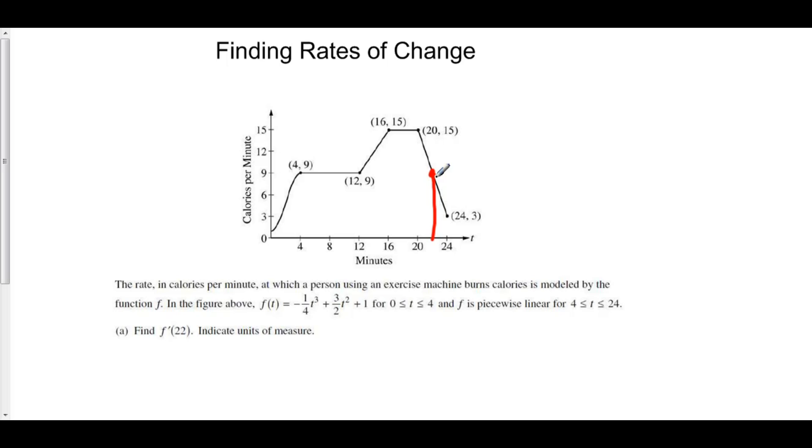Remember that the derivative is the slope of the tangent line. Well, the tangent line here is this line. It's the line from (20, 15) to (24, 3). The fact is that the rate of change at this particular point is the slope of this line right here.